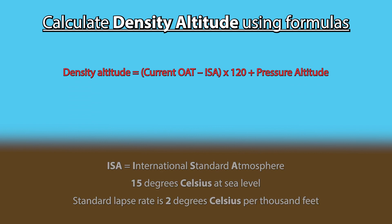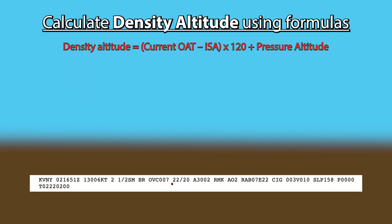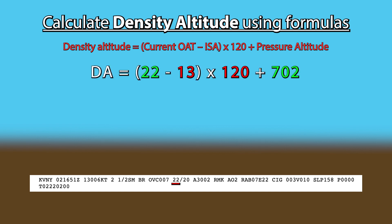Back to our example: the current outside temperature is 22 degrees Celsius, and I'm going to round up our field elevation to the nearest thousand. Remember, the whole point of these calculations is to determine density altitude so you know how well or how poorly your aircraft will perform. Always err on the side of caution, and if you're going to round up or down, do it conservatively.